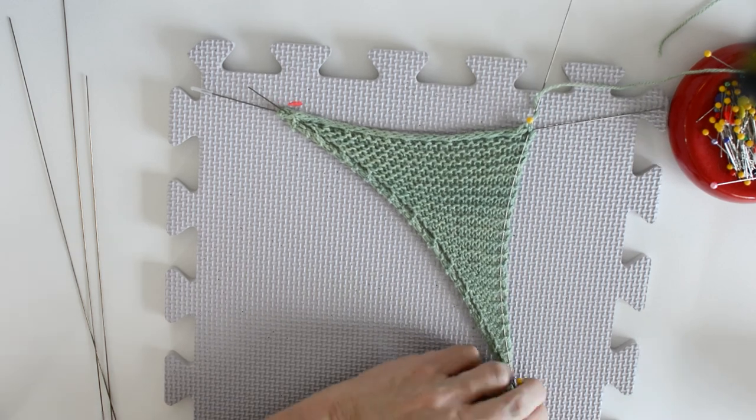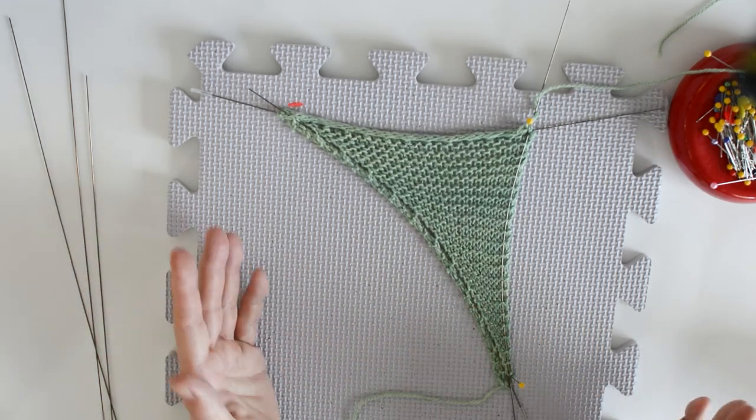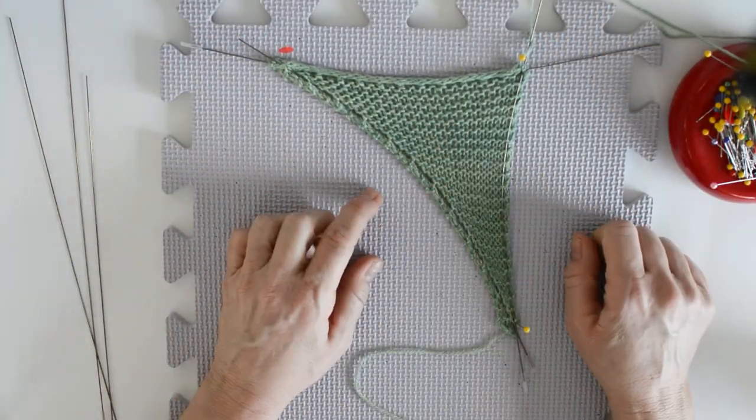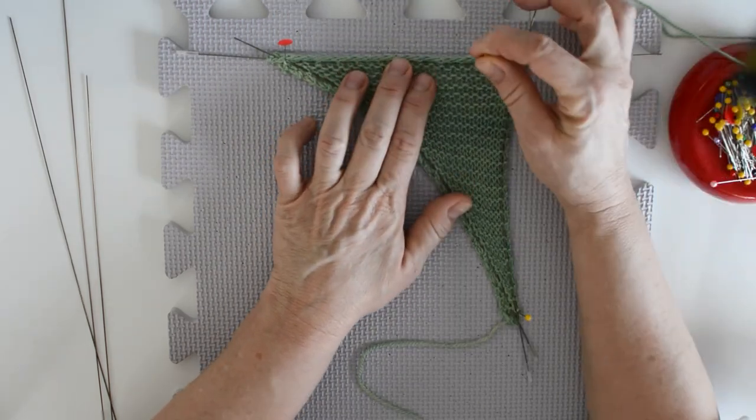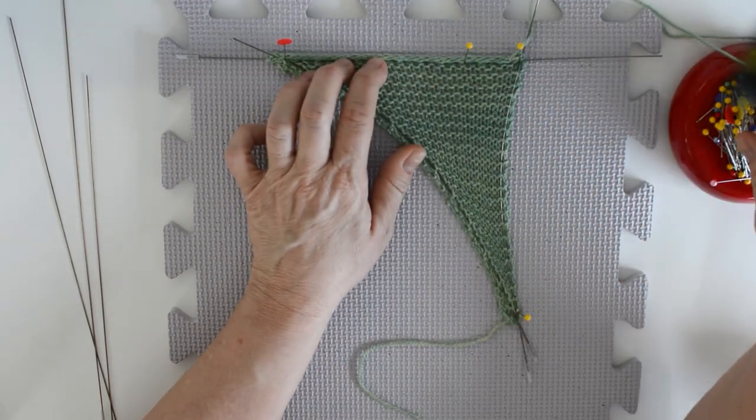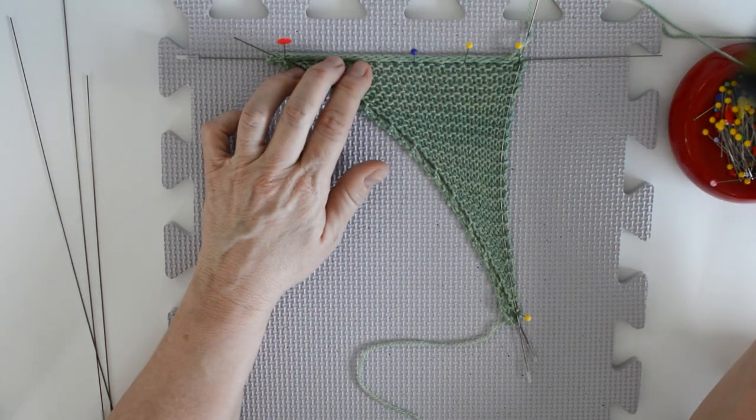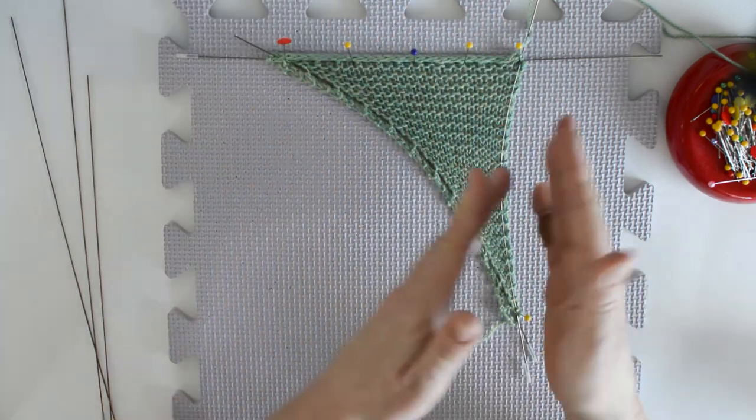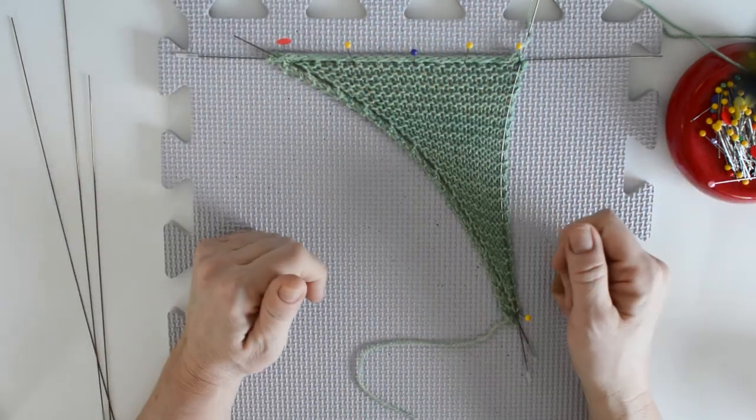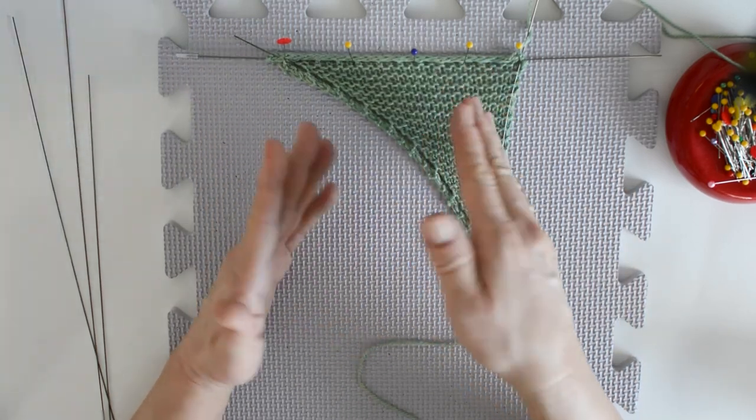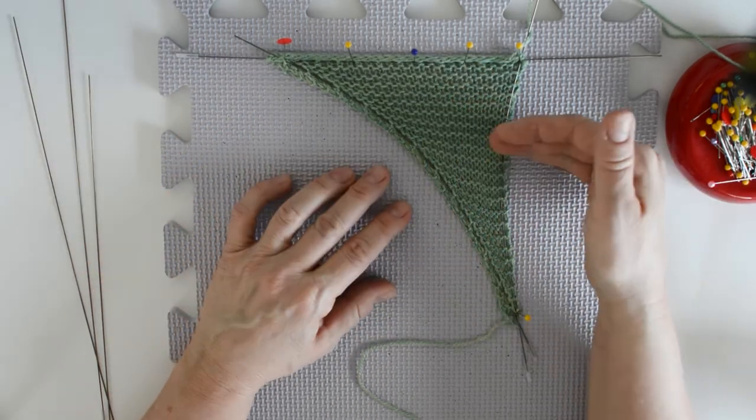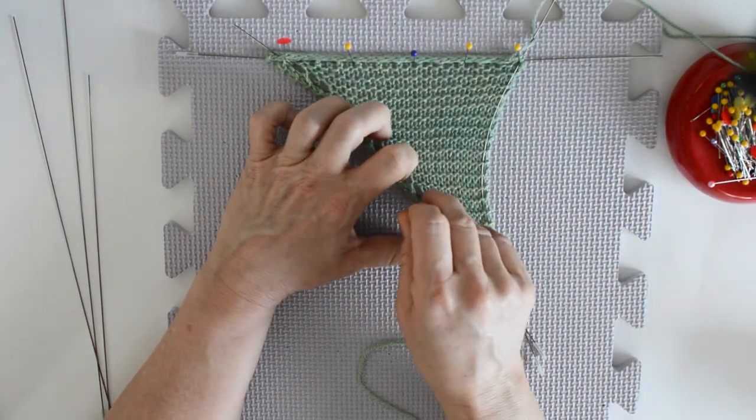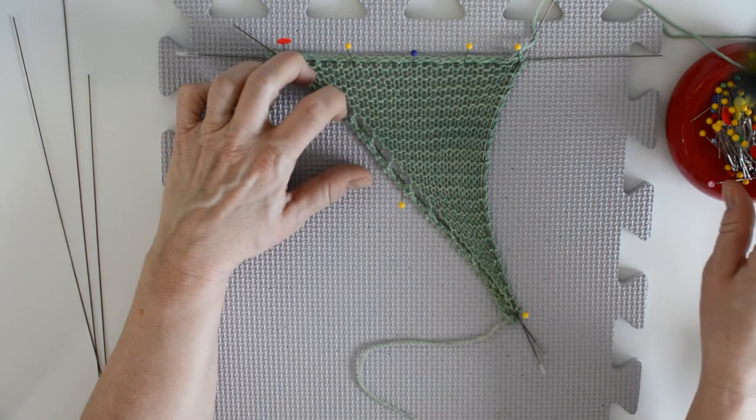So now I've got my three points in. Now I can start to fill out these edges. So I think I'll go up to this I-cord edge first. I put them about, well, depending on the size of the shawl and how many pins I have, frankly, and how well the wires and my blocking mats are behaving. Anywhere between an inch apart and maybe three inches apart, you use a lot of pins. Again, this is another one of those things that can be a little bit tedious, but it is absolutely worth it.